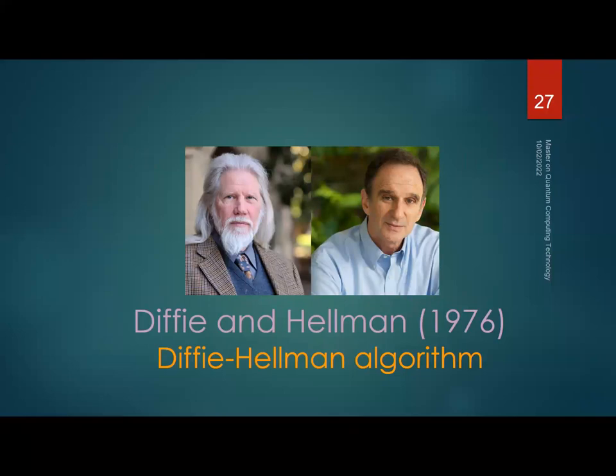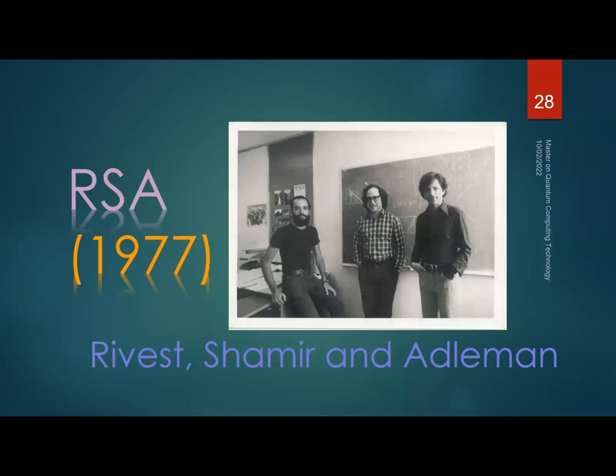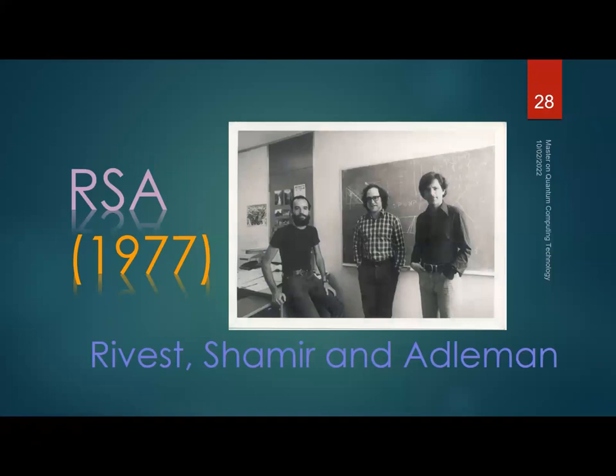Diffie and Hellman proposed an algorithm for secret key sharing between two parties who have never met, through an insecure and unauthenticated channel. One year later, Rivest, Shamir, and Adleman proposed the RSA algorithm — a cryptosystem to send information securely and with authentication.